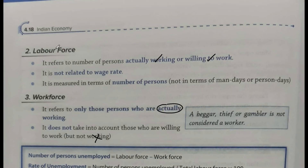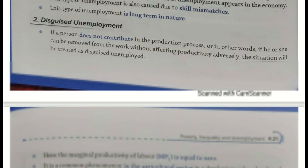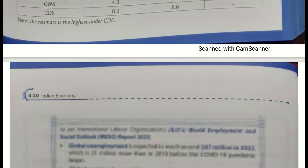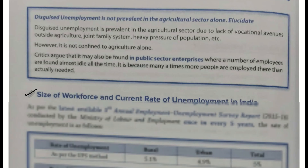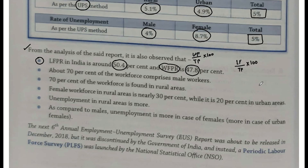Labor force ke andar hain lekin abhi inko kaam mila nahi hai. Lekin workforce ke andar sirf jo kaam kar rahe hain woh present time pe. Toh 3% lagbhag jaata hai — 50.4% labor force participation rate hai, aur 47.8% workforce participation rate hai. Aankde thode bahut upar neeche honge, kuch points badlenge, lekin approximately aap likh sakte hain.